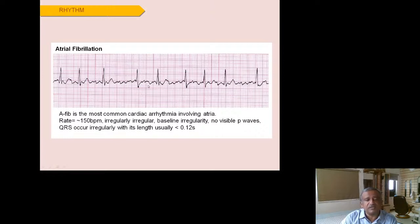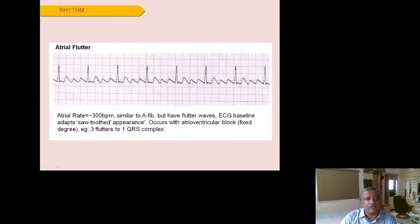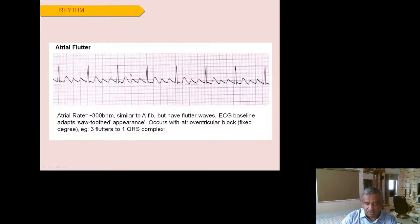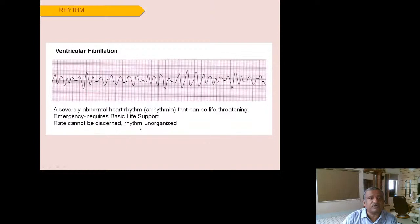Atrial fibrillation shows an irregularly irregular pattern with no clear P waves, no correlation between the atrial waves and QRS complexes, and a rate around 150 or more. Atrial flutter, by contrast, has a sawtooth-like appearance with a fixed ratio such as 3:1 or 4:1 — meaning 3 flutter waves per 1 QRS complex. The key difference: AF is totally chaotic with no sawtooth, while flutter has a fixed atrial-to-ventricular ratio.